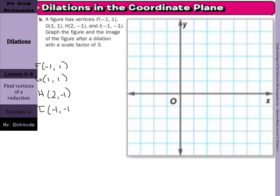As I graph this figure, it looks like a trapezoid. We are going to now take the 3 and multiply our x's and our y's by 3.